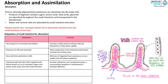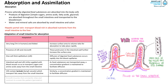The villi contain lacteals which transport fats away from the small intestine. Similarly, a concentration gradient is maintained to facilitate diffusion. The smooth muscles constantly relax and contract in a wave-like pattern, which we know as peristalsis, and this allows food to be brought into close contact with the intestinal walls.